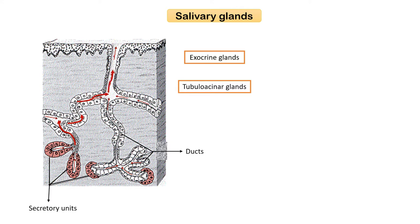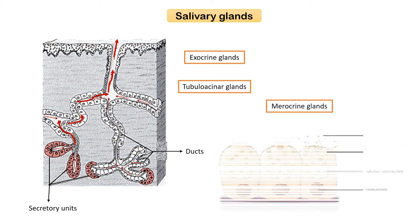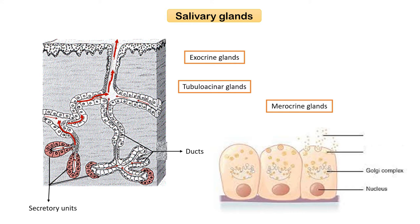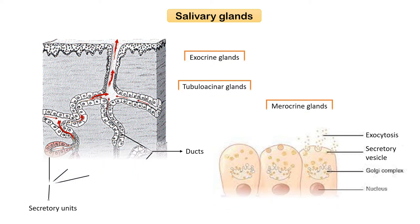Based on the method of secretory production, salivary glands are merocrine glands. The term merocrine is derived from the Greek words 'miros' meaning part and 'krino' meaning to separate. However, this is not completely correct. The secretions of the salivary glands are secreted through a process of fusion of membranous secretory vesicles termed granules with the apical plasma membrane, a process known as exocytosis.